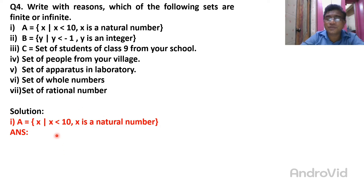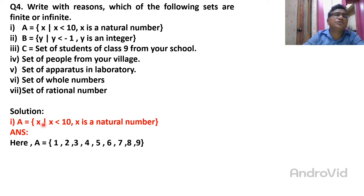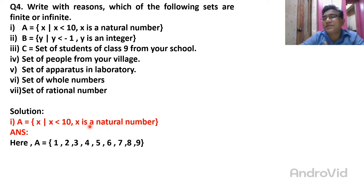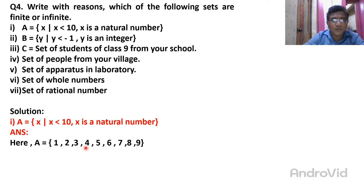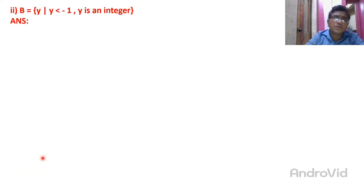Natural numbers smaller than 10 start from 1. So the elements are 1, 2, 3, 4, 5, 6, 7, 8, and 9. The number of elements is limited, so it is a finite set.